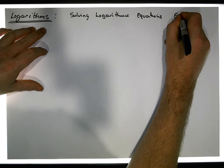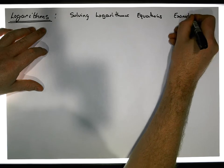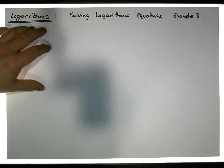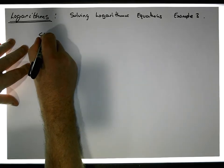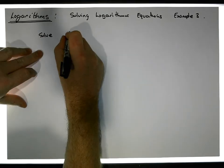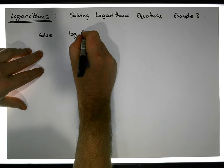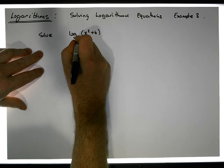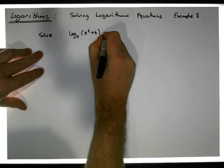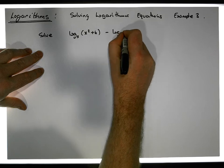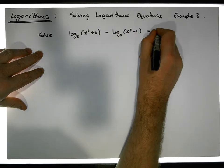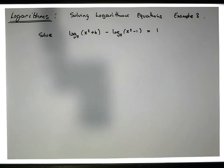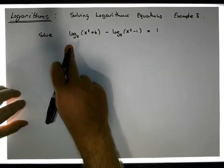This is Example 3. The equation that we'd like to solve is: log of (x squared plus 6) to the base 5, minus log of (x squared minus 1) to the base 5, is equal to 1.